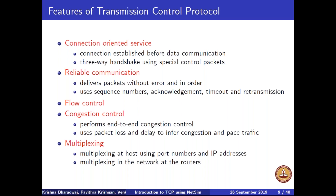Reliable communication is achieved using sequence numbers, acknowledgements, timeout, and retransmission. Using these mechanisms, TCP delivers packets without error and in order. TCP also concerns itself with the rate at which packets are sent into the network. A key functionality is performing end-to-end congestion control without any support from the network layer. Congestion is inferred using packet loss and delay in acknowledgements, and the congestion control algorithm paces the traffic. Finally, port numbers and IP addresses are used to multiplex multiple flows to applications, and the congestion control algorithm also governs how network resources are shared by TCP flows.